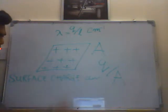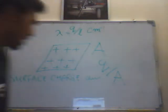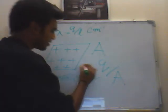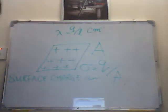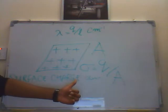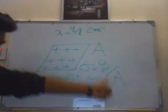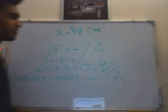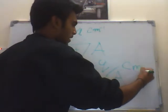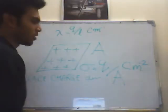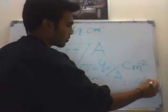This is denoted by the Greek letter sigma. So sigma equals Q by A. The unit is coulomb meter squared inverse, or coulomb per meter squared.